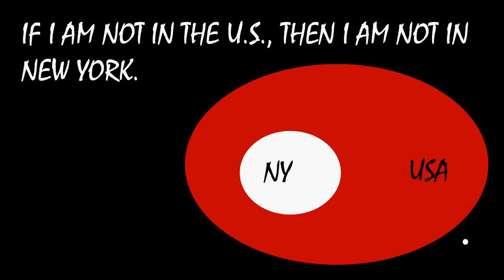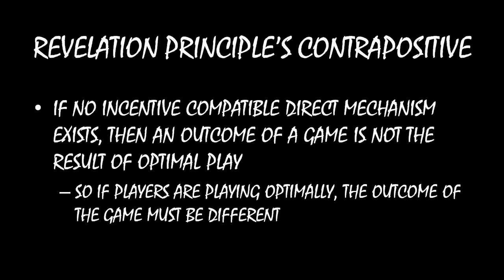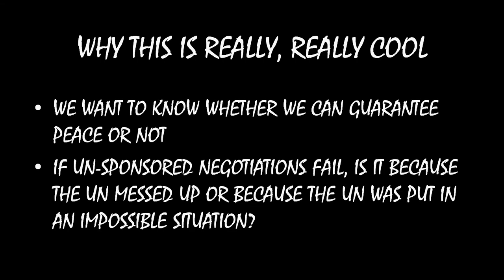If we take this idea of contraposition and apply it to the Revelation Principle, the Revelation Principle's contrapositive says that if no incentive-compatible direct mechanism exists, then an outcome of a game is not the result of optimal play. So if players are actually behaving strategically — as a rebel group and a government should be when they negotiate with each other — it can't be the case that the outcome of the game is what we were thinking it is if we can't write down an incentive-compatible direct mechanism.